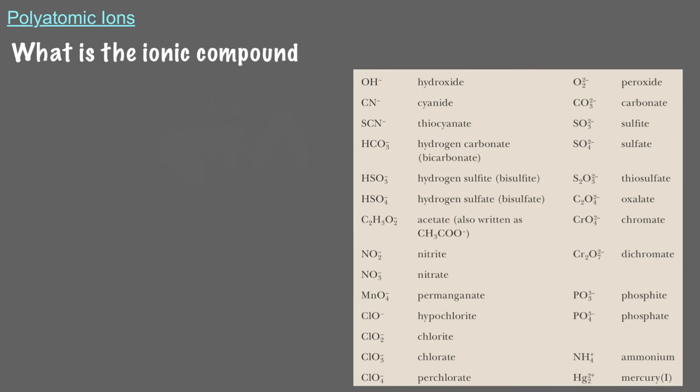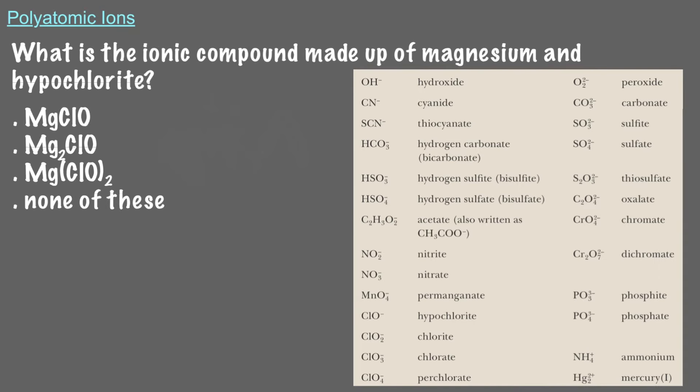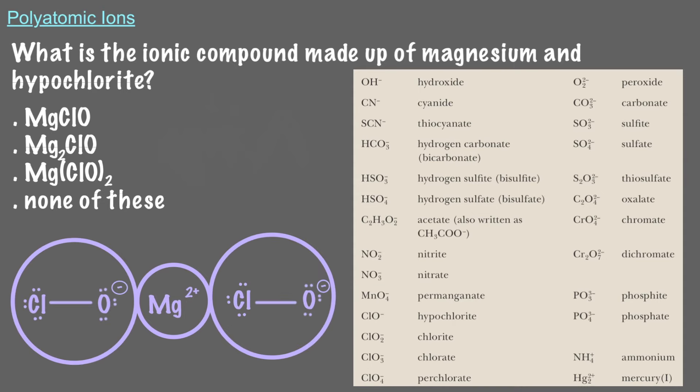What is the ionic compound made up of magnesium and hypochlorite? Magnesium is an alkaline earth metal, so it makes a cation with a positive 2 charge. Therefore, we need 2 hypochlorite ions to balance out the charge of 1 magnesium. So, our ionic compound is Mg(ClO)2, magnesium hypochlorite.